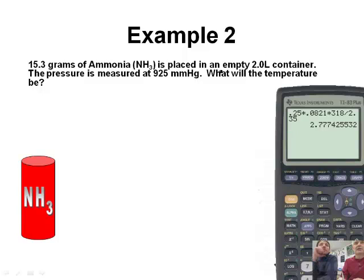15.3 grams of ammonia is placed in an empty two-liter container. The pressure is measured at 925 millimeters of mercury. What will the temperature be?